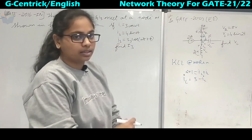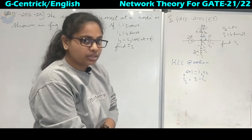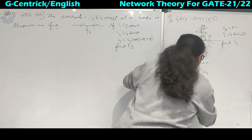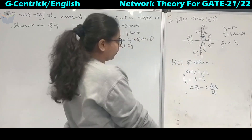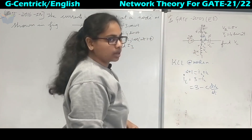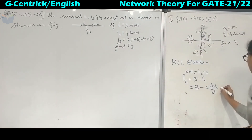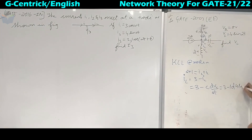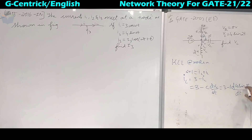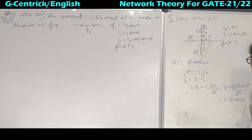The current IC through the capacitor is calculated using the formula C·dV/dt. So it is 3 minus C·dVc/dt. They have given the voltage across the capacitor as 4·sin(2t), and the capacitance is 1 farad. So we differentiate: 3 minus d(4·sin(2t))/dt. Differentiation of sine is cosine, so 2 into 4 is 8. We get IL = 3 minus 8·cos(2t) amperes.